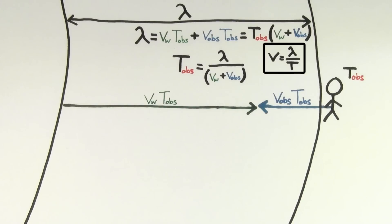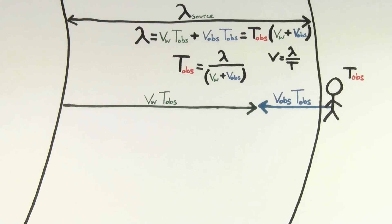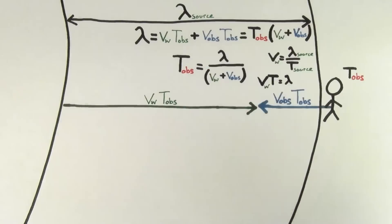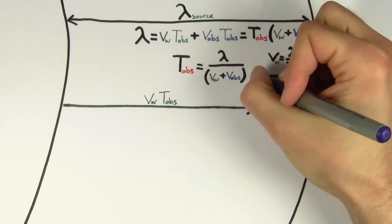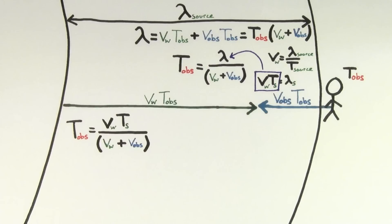The velocity of the wave must equal the wavelength of the source divided by the period of the source. Since this wavelength was the actual wavelength emitted by the source, we also use the actual period of the source, not the observed period. If we solve for the wavelength, the speed of the wave times the period of the source equals the wavelength of the source. Plugging this expression in, we get that the observed period equals the speed of the wave times the period of the source divided by the speed of the wave plus the speed of the observer.